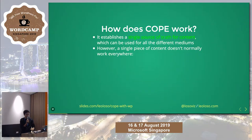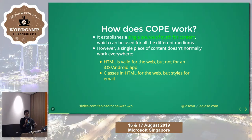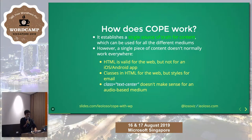There's a problem: every single piece of content doesn't normally work everywhere. For instance, you work with HTML for the web, but you cannot use HTML to make an app. If you use a class like align-center but send an email or newsletter, you need to transform that into styles. And a style like text-center doesn't make sense for an audio-based medium. What does it mean for Amazon Alexa to play some content in the middle? Not everything works everywhere.